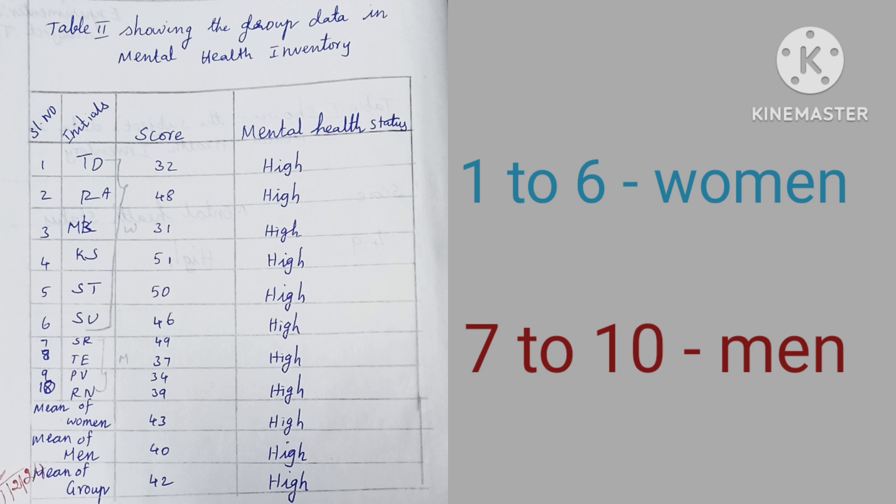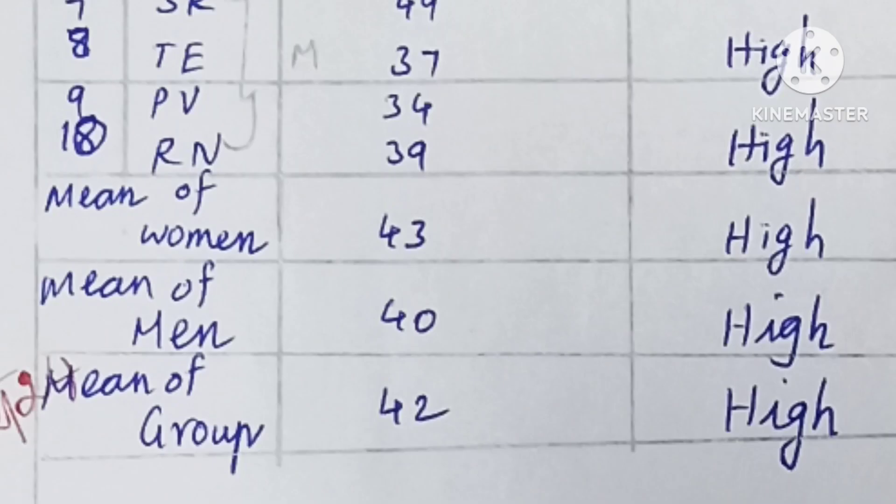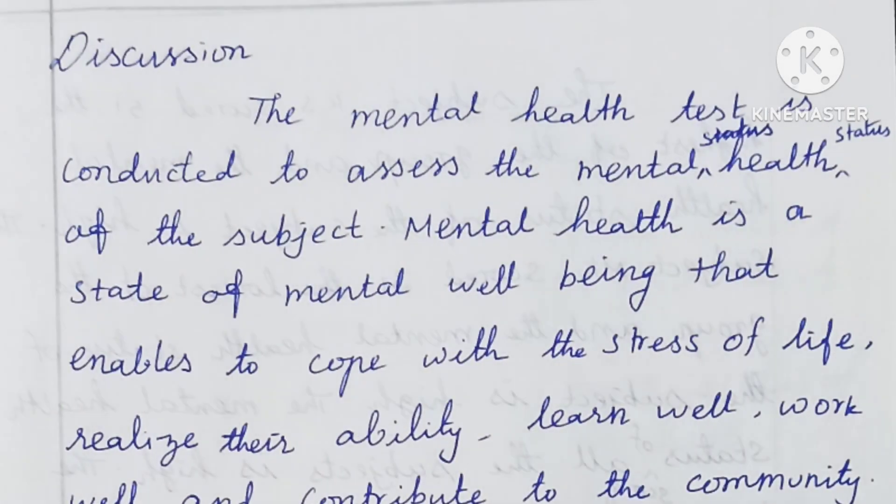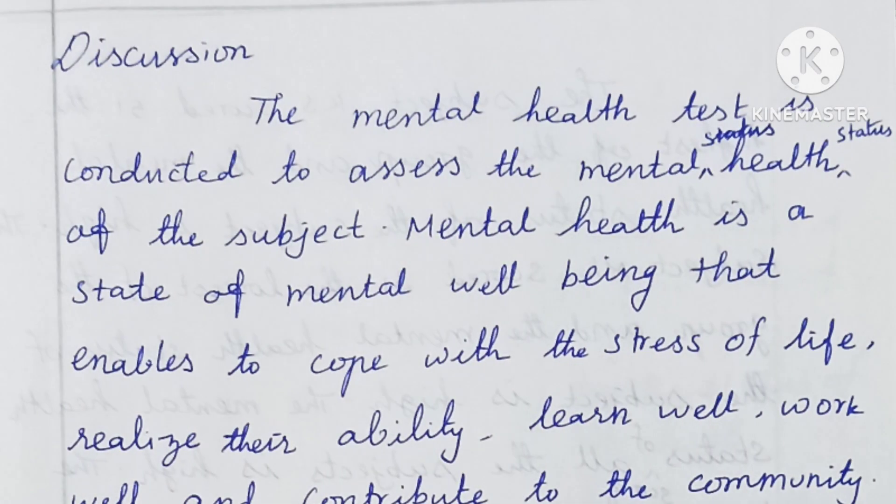In my class there are ten students. We have to collect data from all ten students and consolidate it in Table Two with their initials, score, and mental health status. After collecting the data, we have to find the mean of women, mean of men, and mean of the group, and determine the mental health status respectively.